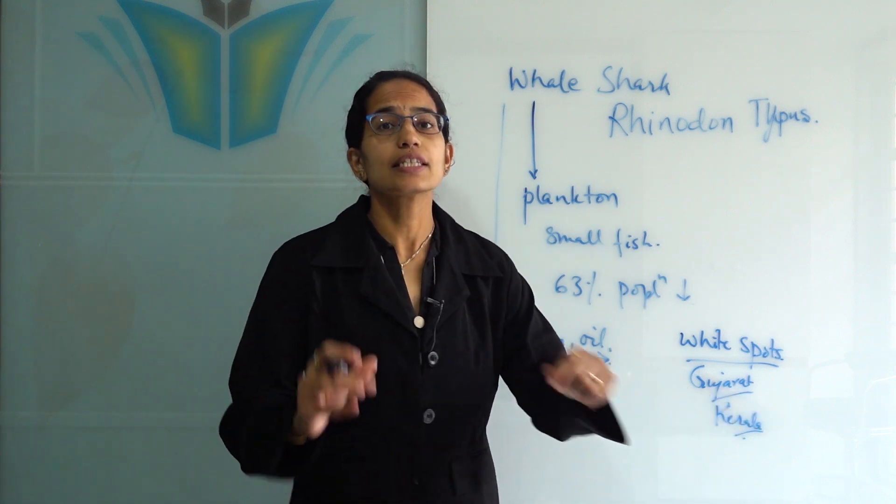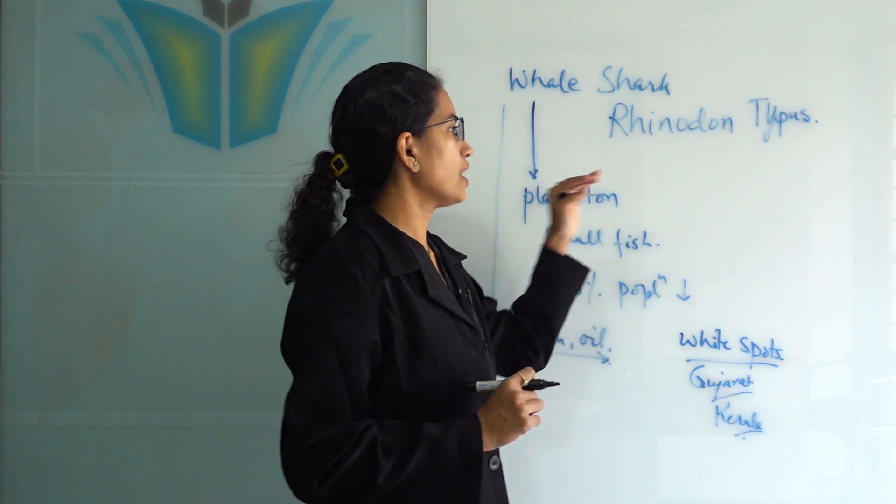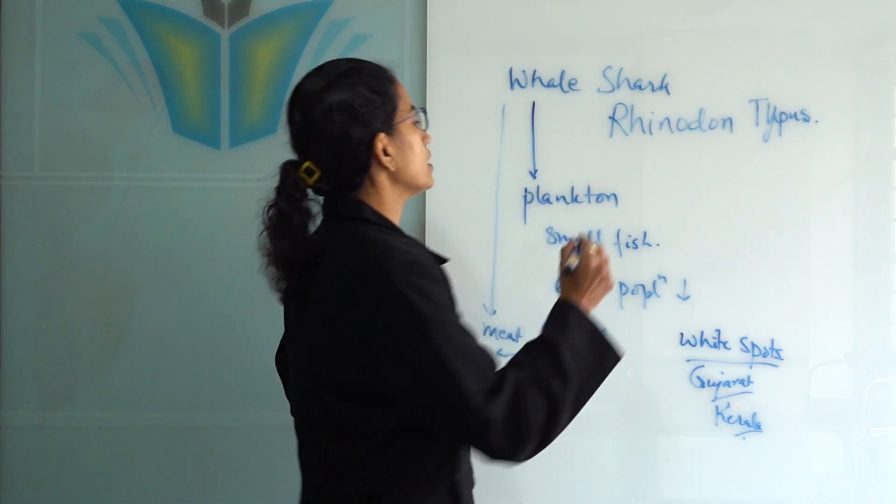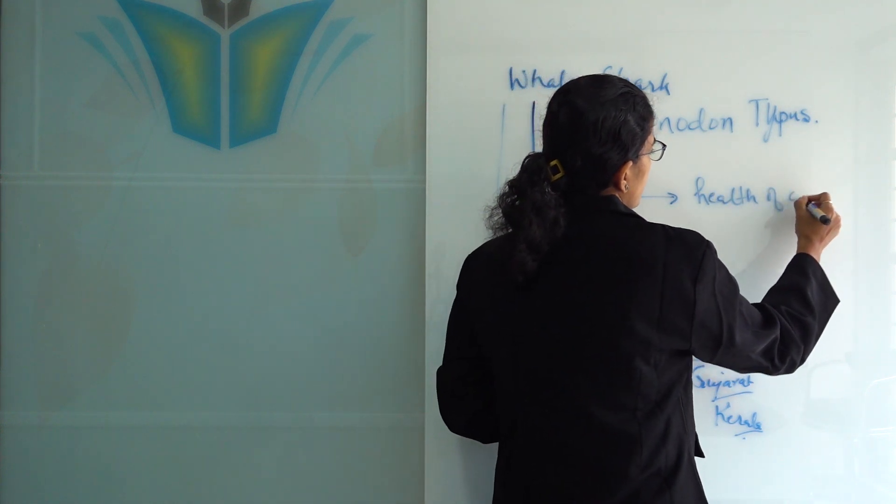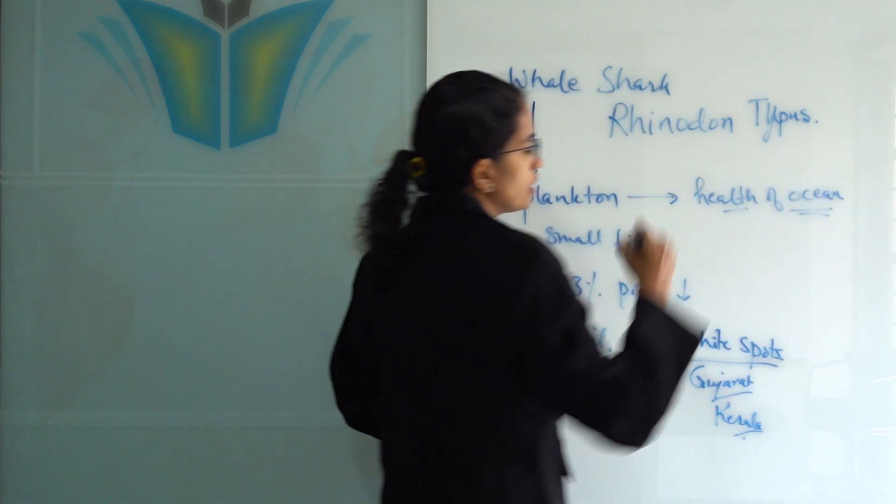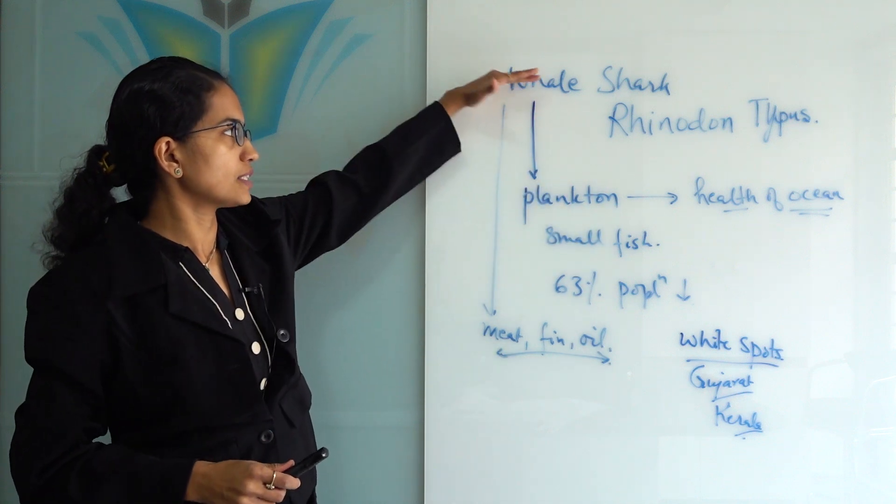Whale sharks uniquely have nearly 300 rows of teeth and are able to feed on planktons. They tell us a lot about the health of the ocean. The region where planktons are abundant is indicative of a healthy ocean region and also the presence of whale sharks.